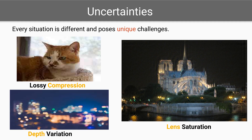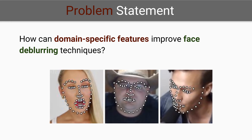There are many challenges in solving this problem. In real-world imaging, various uncertainties can creep in, like lens saturation, depth variation, and lossy compression, which cause blurriness in the image. This increases complexity and makes the problem very difficult to solve.